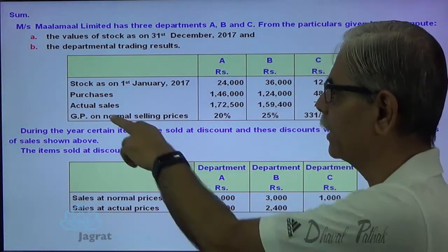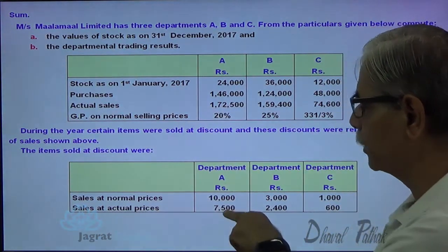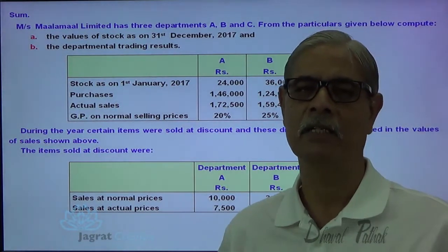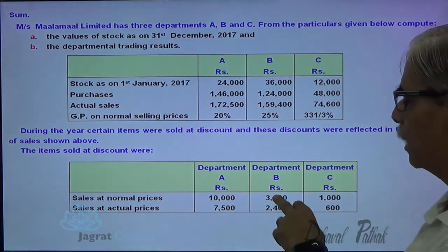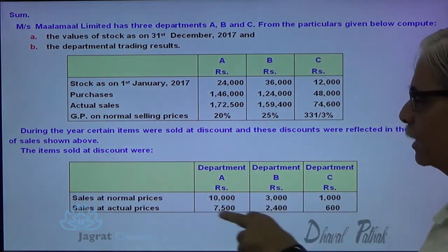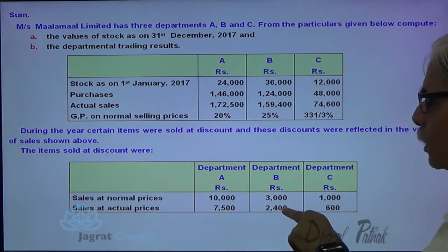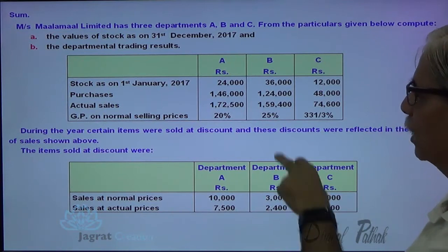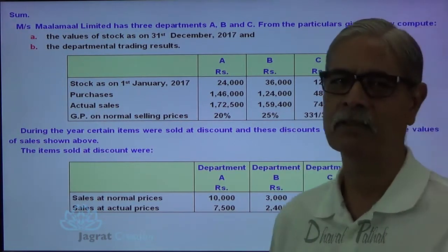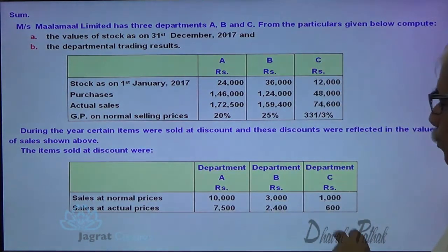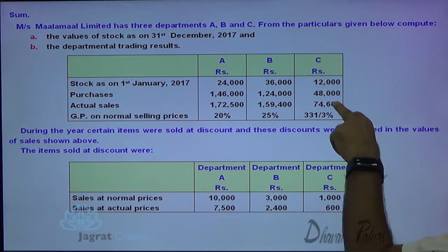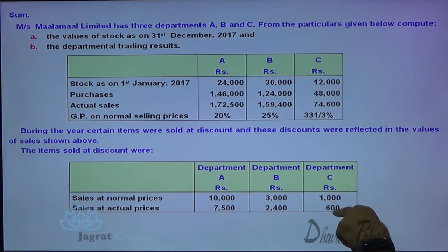So this 1,72,500 includes this 7,500 wherein discount was granted — sales at a discounted value is the actual sales. This 7,500 is a part of 1,72,500. Similarly, the normal sales price was 3,000 but the discounted sales price was 2,400, which is the actual sales. So this 2,400 is a part of 1,59,400. The normal sales price would have been 1,000 but the actual sales price is 600, so 74,600 includes this 600.